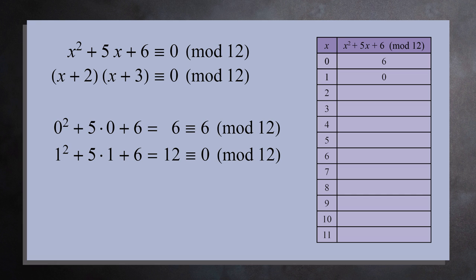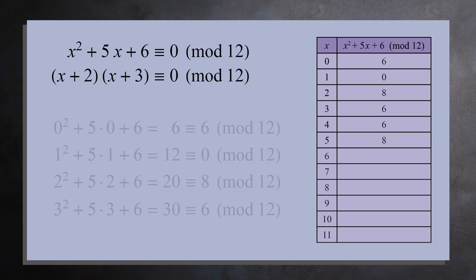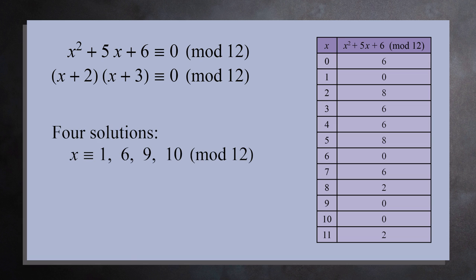This is interesting — here's a solution to the equation that we did not find by factoring. Plugging in 2 gives us 8. 3 gives you 6. Filling out the table for the remaining numbers, we see this equation has not 2 but 4 solutions: 1, 6, 9, and 10. Factoring only identified the solutions 9 and 10.